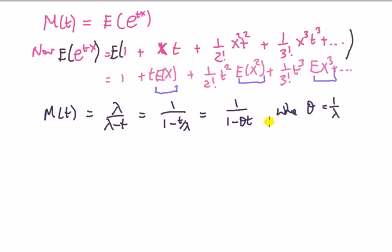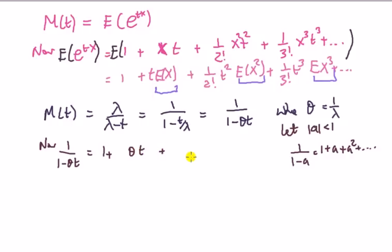You've seen this kind of expression before. If |a| < 1, then 1/(1-a) is a geometric progression: 1 + a + a² + ... Look at this—doesn't it look like a geometric progression? If θt is less than 1 in absolute value, then 1/(1-θt) = 1 + θt + (θt)² + ...